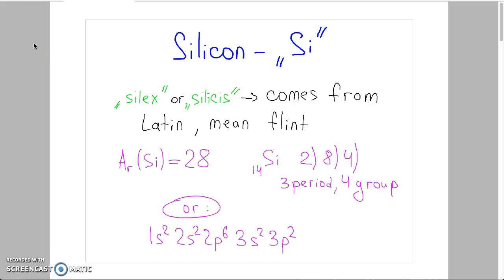In this video we will talk about silicon and its compounds, some chemical properties. Silex or silicis is a name that comes from Latin and means flint.